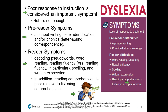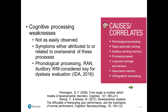Then we move into what would be causing those symptoms to occur. Cognitive processes or cognitive skills are not as easily observed — we have to assess these using very specific, highly specialized tools and assessments. We have to be able to contribute to our overall hypothesis: if I'm looking at a symptom, I want to be able to link that symptom to one of the causes or correlates.